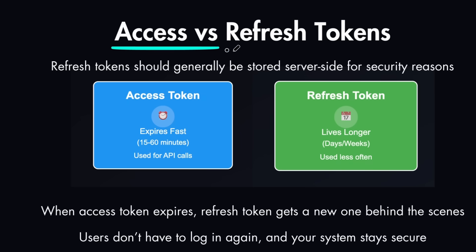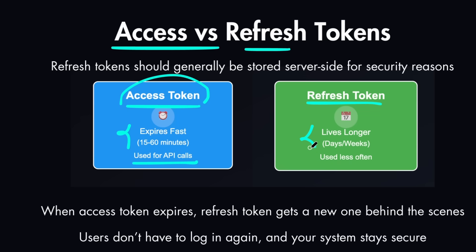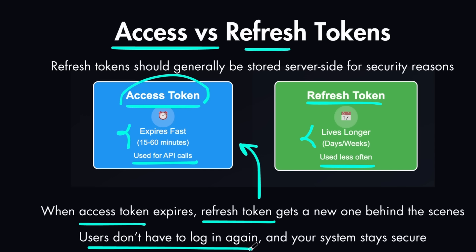Modern systems also use access and refresh tokens. Access tokens are short-lived and expire faster, while refresh tokens are long-lived and expire later. Access tokens are used for API calls — whenever you want to get data from the API, you send the access token. Refresh tokens, on the other hand, are used to renew access tokens. Whenever an access token expires, the refresh token is used to get a new access token behind the scenes, so users stay logged in and the system stays secure by frequently renewing access tokens. You should typically keep refresh tokens on the server side for security reasons.